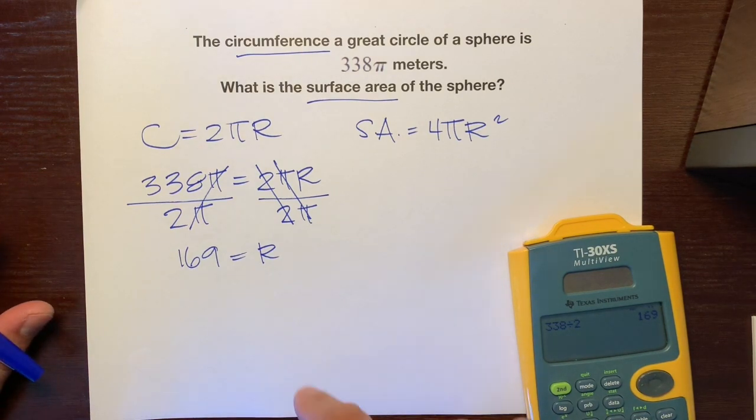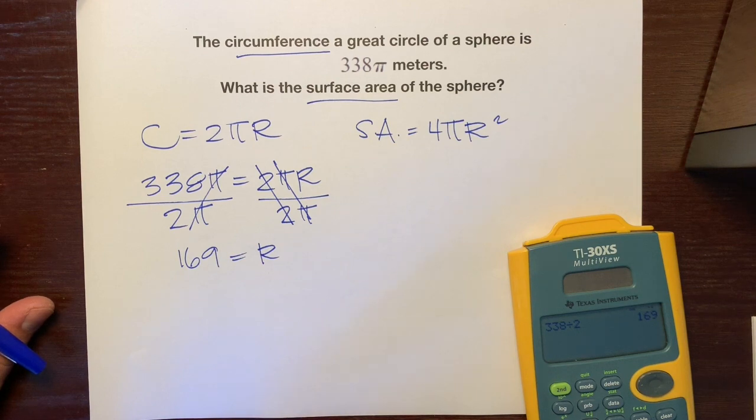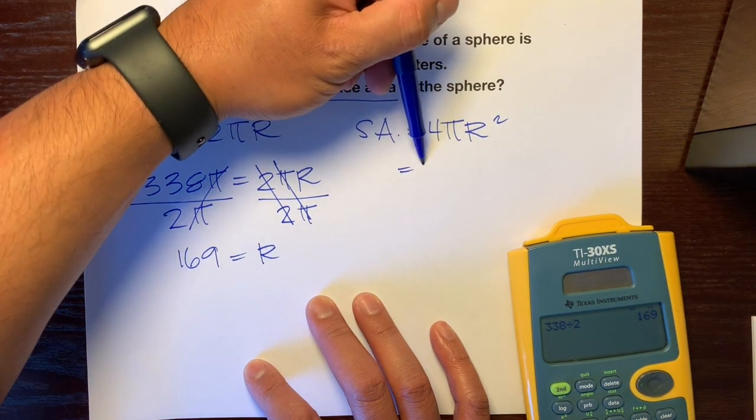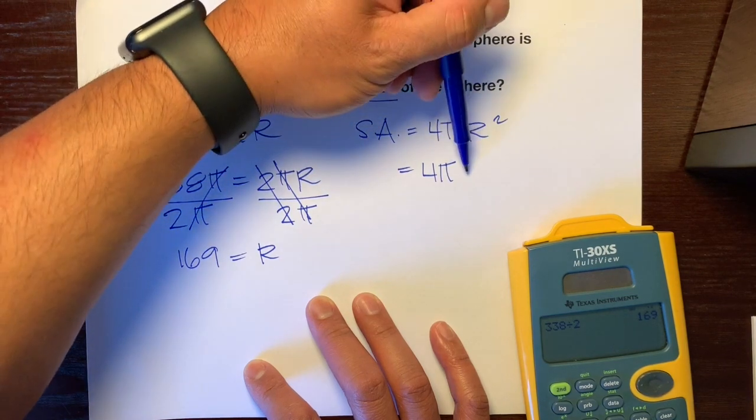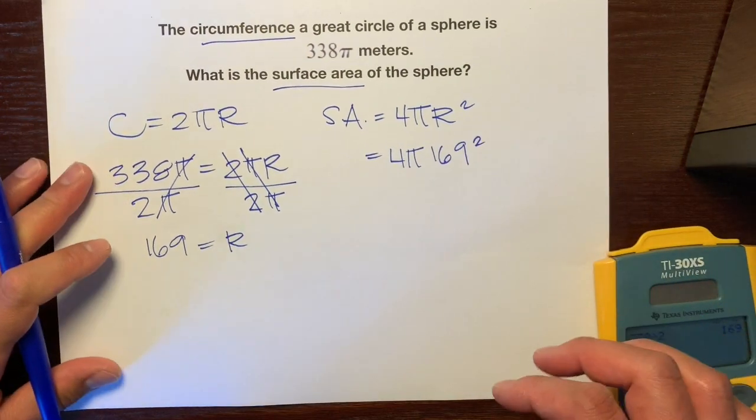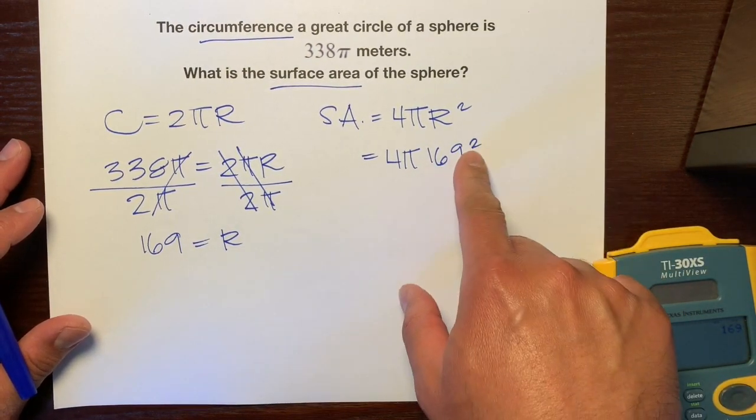So now we're going to use this and plug it in to find the surface area of this sphere. Radius is 169, so we'll plug that in: 4π times 169². And remember order of operations: parentheses, no parentheses, exponents - we have an exponent.